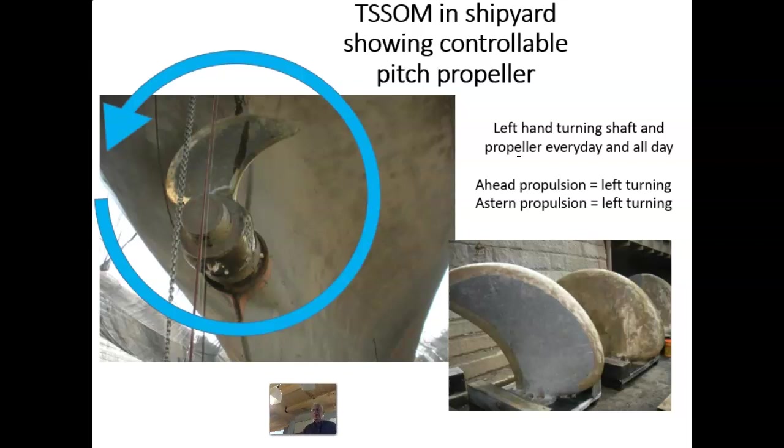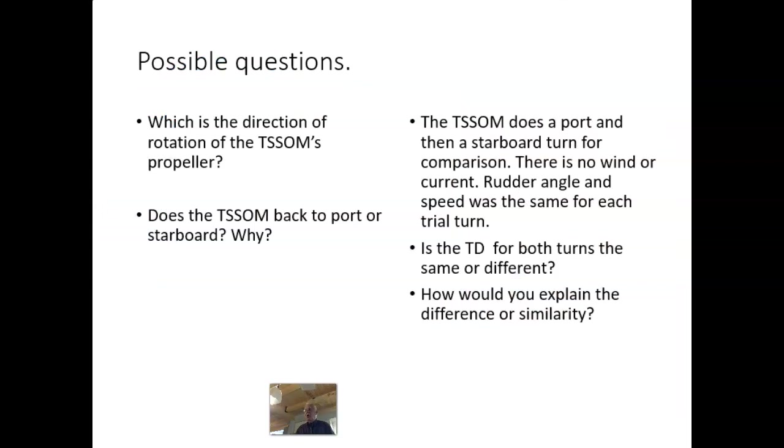What I'm telling you here, it is a left-hand turning shaft and a left-hand turning propeller. Left-hand turning shaft propeller every day, all day. This is a controllable pitch propeller. It is always left-handed. We never change the rotation of that shaft, that propeller. So what does that do to turning circles? You should know, and you should be thinking about this. Does the T-SOM back to port or to starboard?